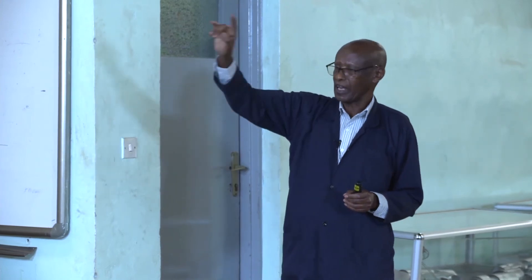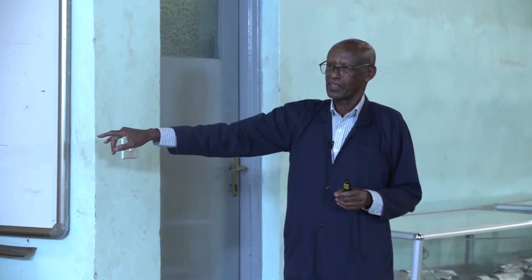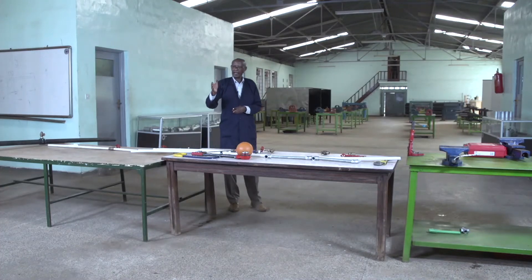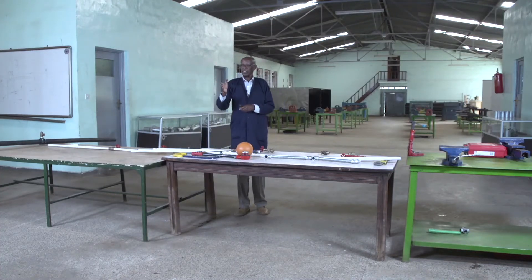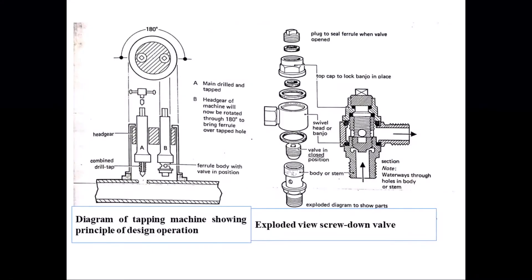These are the pipes coming from the tank to the appliances. There is a diagram showing the principles of design and operation of the tapping machine, also called an under-pressure tapping machine. This diagram also shows the ferrule in pieces. All of these are components of the new water main connection.